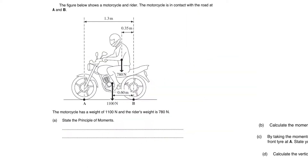We have a motorcycle and rider. The motorcycle is in contact with the road at points A and B. At point A, the front wheel, there's a normal contact force acting upwards, and at point B there's a normal contact force acting upwards as well. Those two forces have not been drawn on the diagram. The motorcycle has a weight of 1100 newtons and the rider's weight is 780 newtons, already given on the diagram.